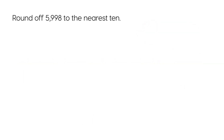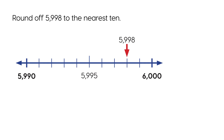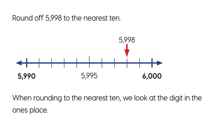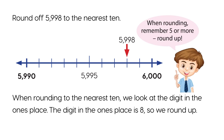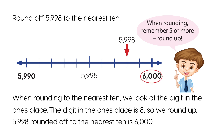Round off 5,998 to the nearest ten. When rounding to the nearest ten, we look at the digit in the ones place. The digit in the ones place is 8, so we round up. 5,998 rounded off to the nearest ten is 6,000.